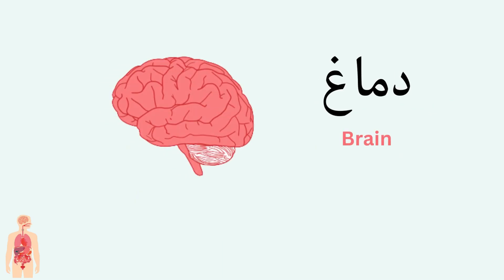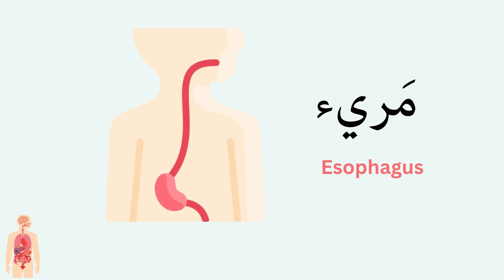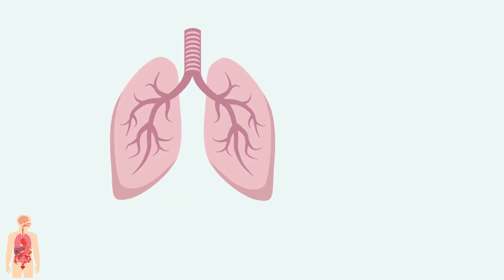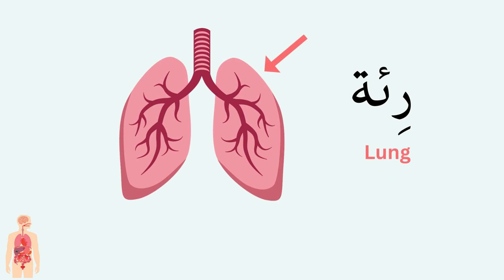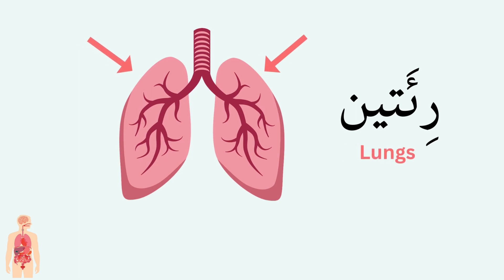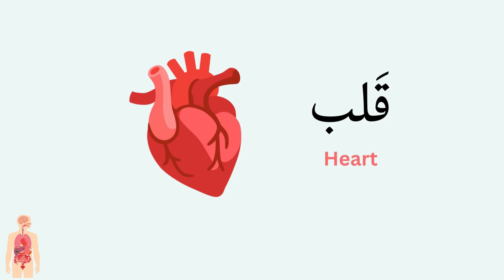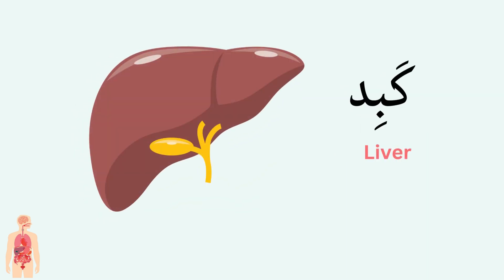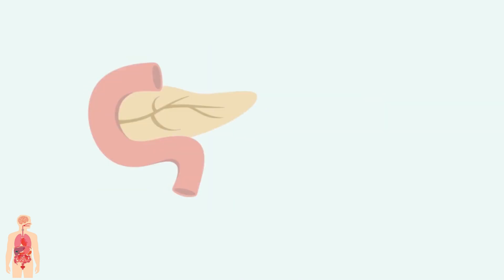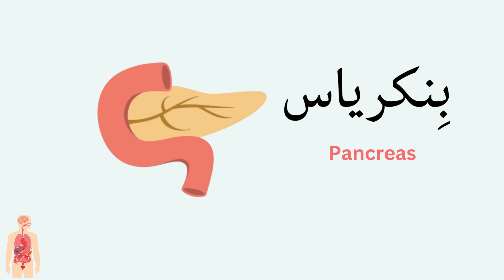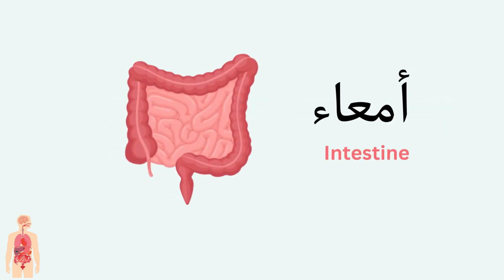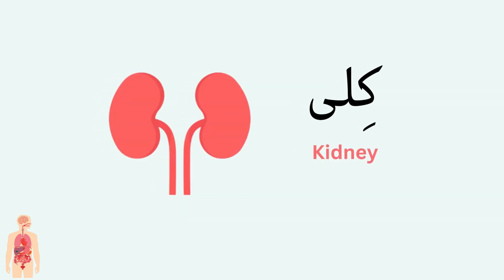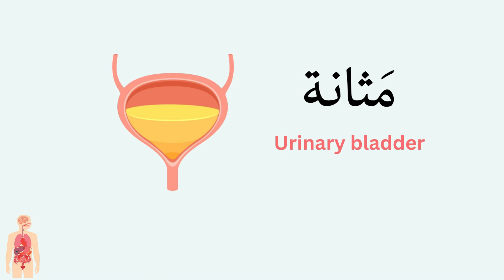دماغ (brain), مريء (esophagus), رئة (lung), رئتين (lungs), قلب (heart), معدة (stomach), كبد (liver), بنكرياس (pancreas), أمعاء (intestines), مثانة (bladder).